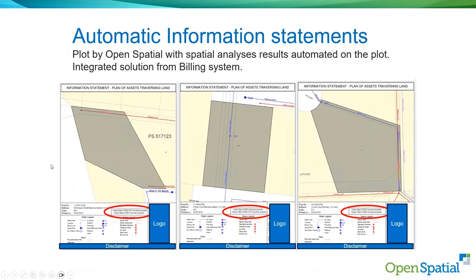A similar automation is the automatic information statement. Rather than offsets and distances, this pulls from the billing system to report which assets traverse a land parcel. It maps the parcel, runs the spatial analysis, and produces a summary — for example, 'water main does not traverse the property, sewer does' — covering both water and sewer.